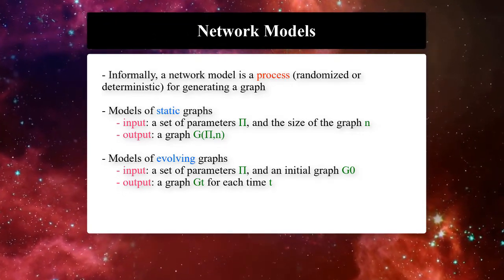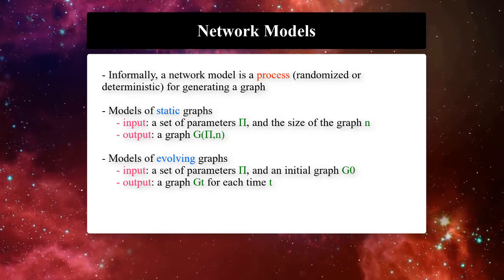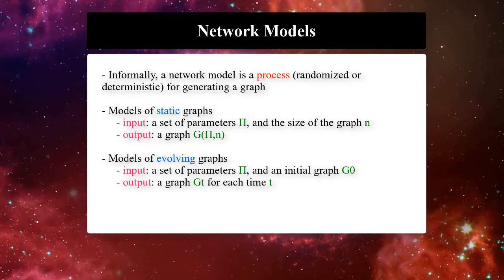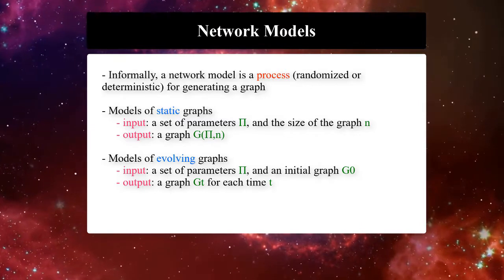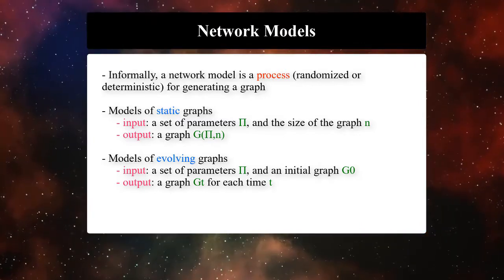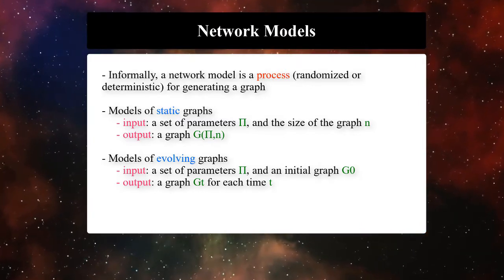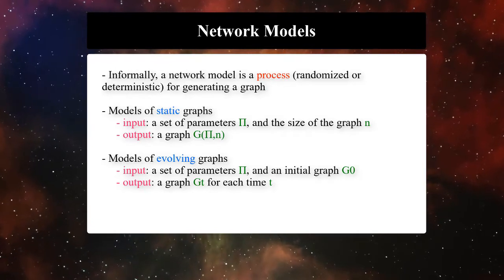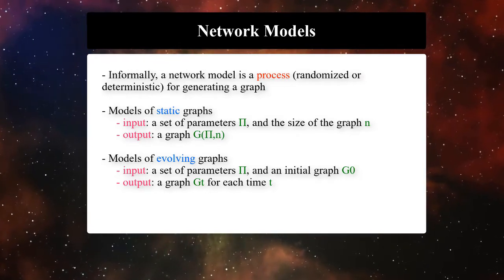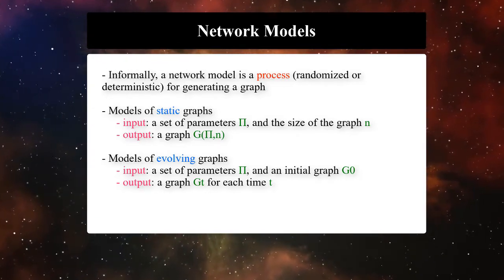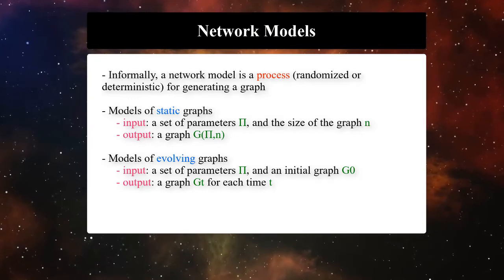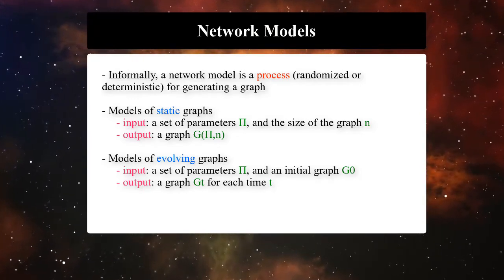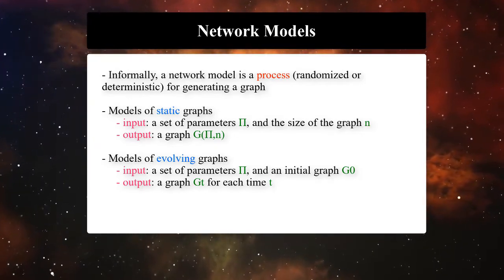We can think of models of static graphs or evolving graphs. Models of static graphs get a set of parameters pi and the size of the graph n as input and return a graph as output. Models of evolving graphs get a set of parameters pi and initial graph G0, and return graph Gt for each time t as output.